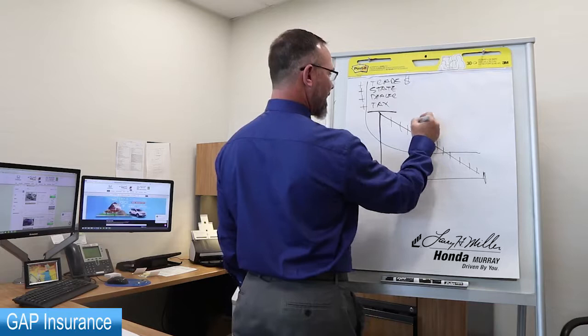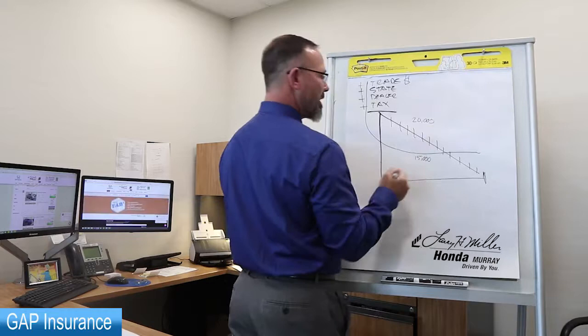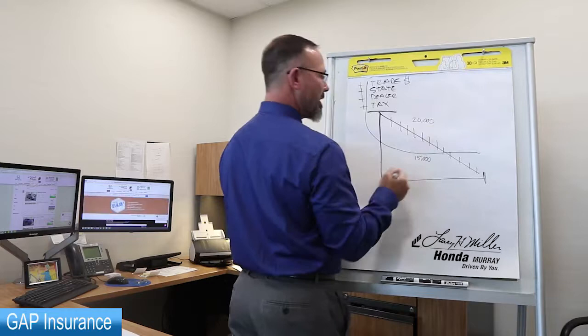An accident occurs at this stage in the game. Let's say that you owe $20,000 and your insurance company tells you they want to pay $15,000. Gap Insurance is going to provide you with this difference here, as well as making your deductible for you.